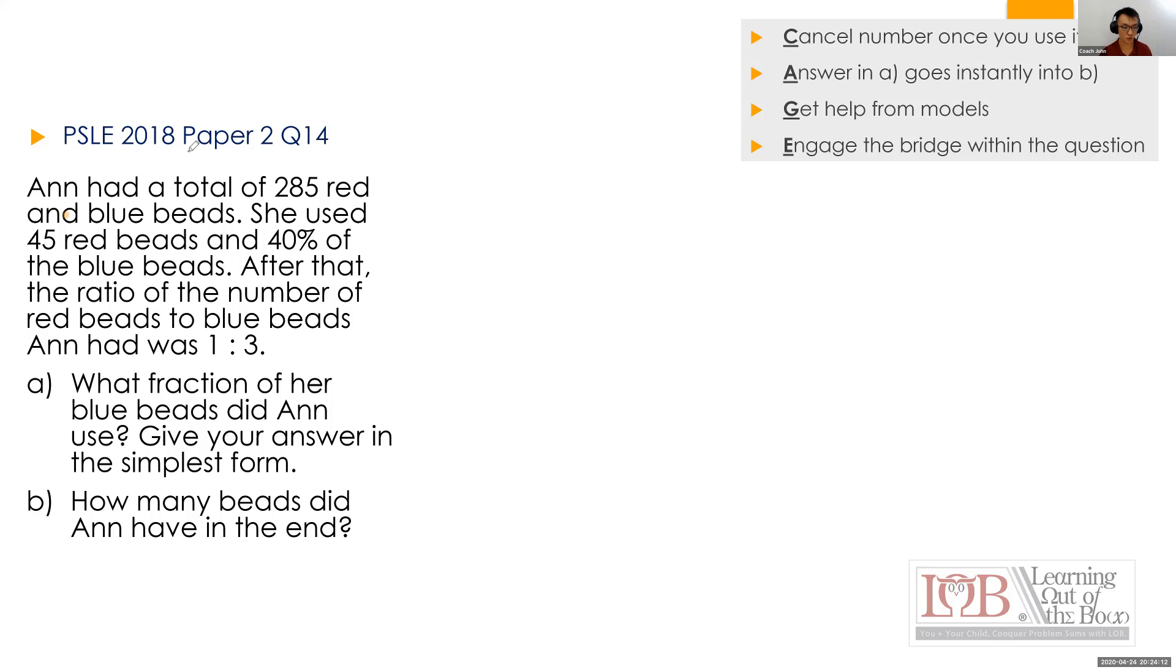So parents, I need you to follow this closely because as much as you have seen this before, I need to give you an opportunity to practice the CAGE method. Okay, so Anne had a total of 285 red and blue beads. So parents, when you see this, get your child to underline quickly. She used 45 red beads and 40% of the blue beads. After that, the ratio of red to blue is one to three. It doesn't take a lot of your time, but somehow it condensed the long question into less than 10 words.